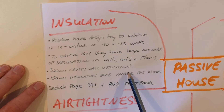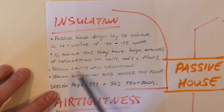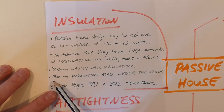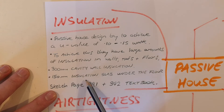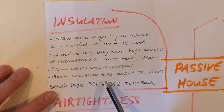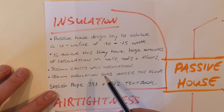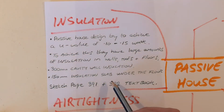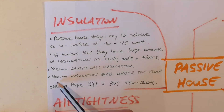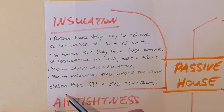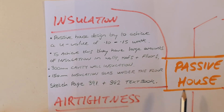They make the cavity much bigger and put in a lot more insulation. They also have a 150 millimeter insulation slab under the floor. On your own mind map you can take down these three or four points in your own words.